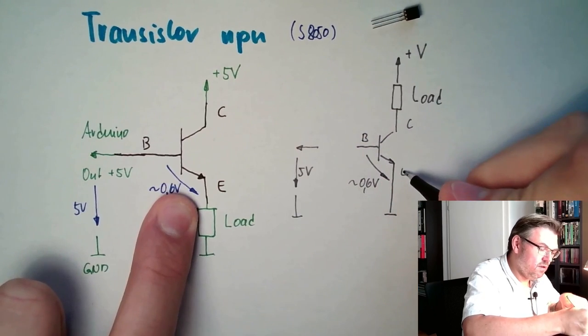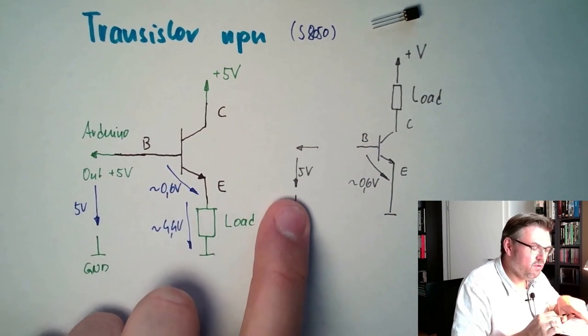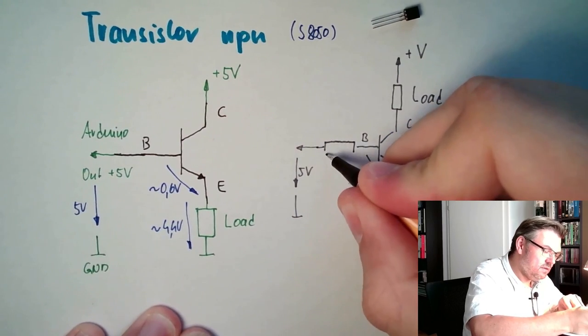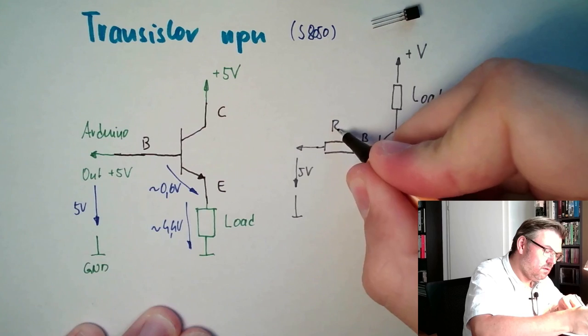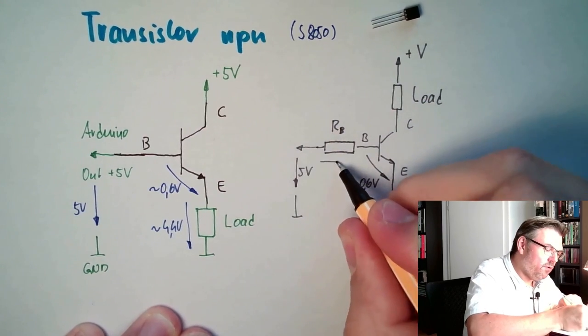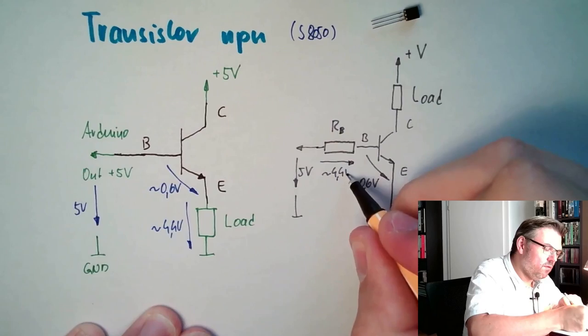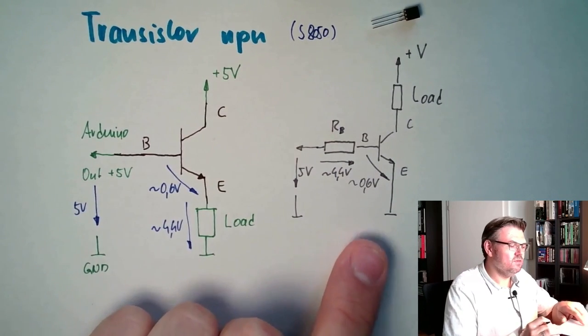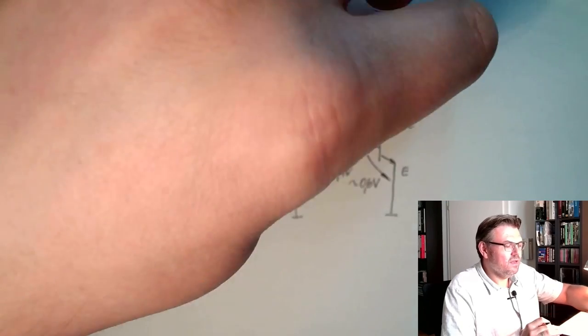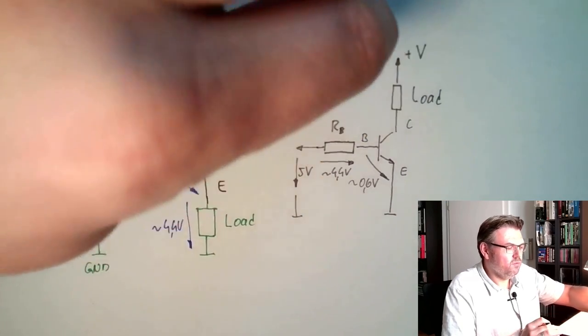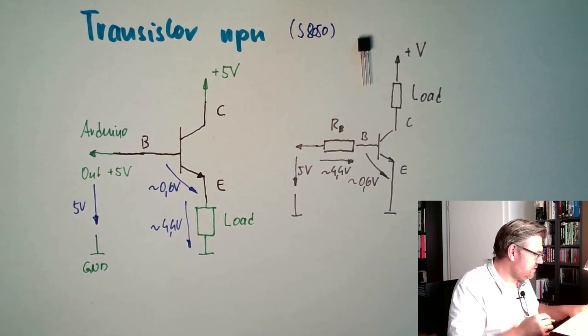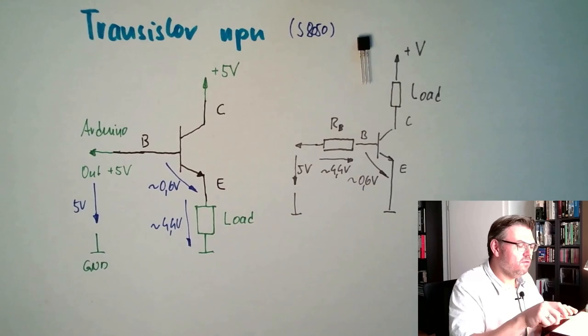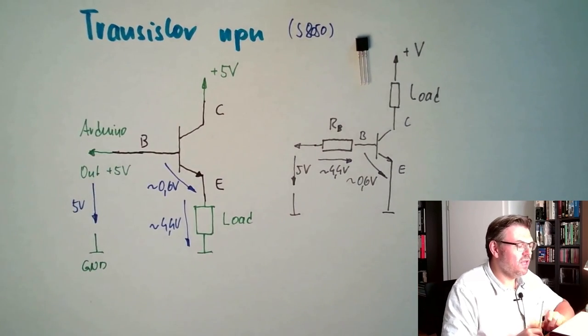Base, collector, emitter. And here we have 5V. This cannot be, so we need a suitable size base resistor where the rest can drop. This is a little bit harder to calculate. Luckily, we do not have this case. So we do not have to take care about any base resistor, we just use it like this.